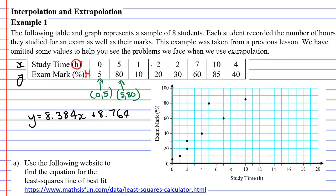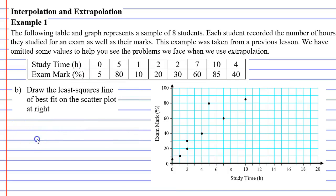Capital M will write that. So then I get M for Mark equals 8.384H plus 8.764. So we'll take this equation. I imagine we're going to use this in the next question and we'll now move on to question B.